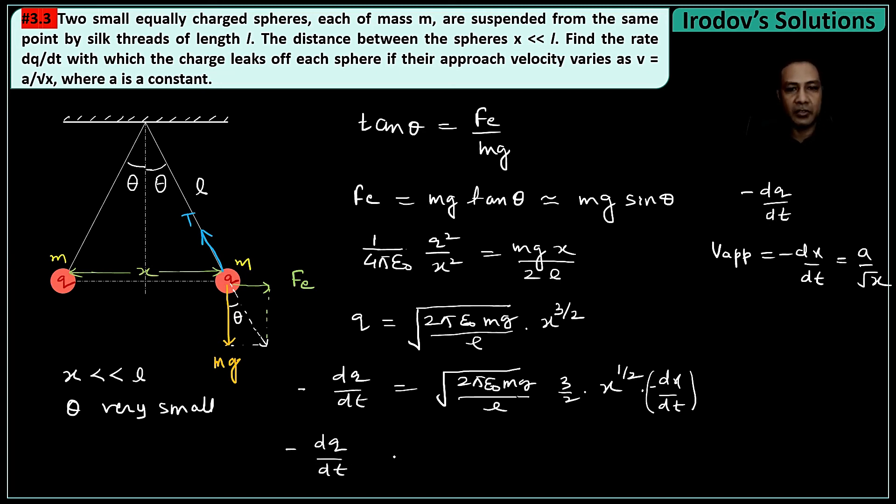So finally I'll get the rate of leaking of charge: the rate at which it decreases, -dq/dt, is √(2πε₀mg/l), let me bring this 3/2 here. And this is √x, and -dx/dt is a/√x. This will get cancelled, so this whole thing will just remain with a. So I can write that is equal to (3/2)a times that whole thing, and that's my rate of leaking of charge. This comes out to be a constant.